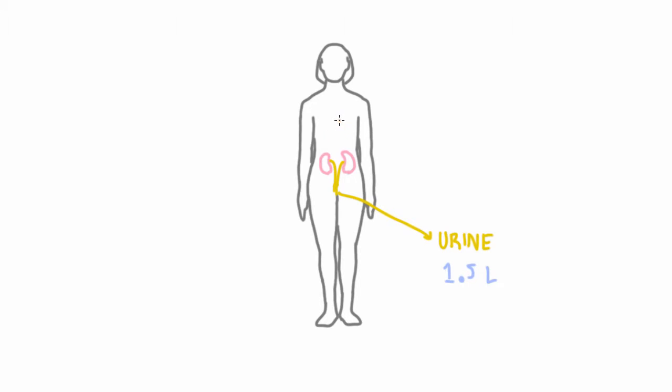Probably the most obvious is through drinking. So I'll draw a stomach here. So when you drink fluid, that goes into your stomach and then gets absorbed into your body. And on the average day, you might drink about one or maybe a little more, 1.2 liters of fluid.